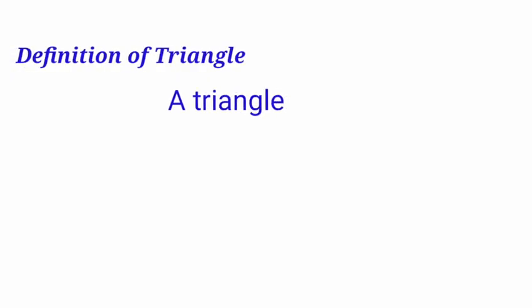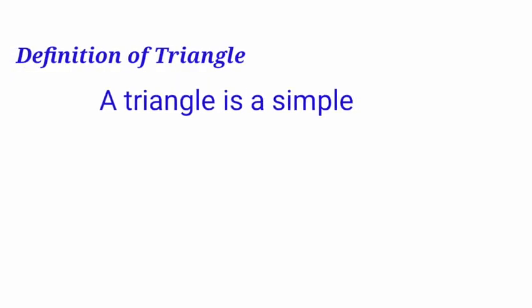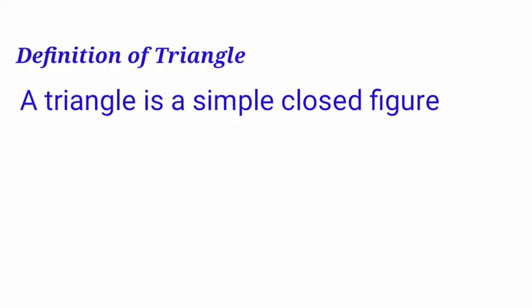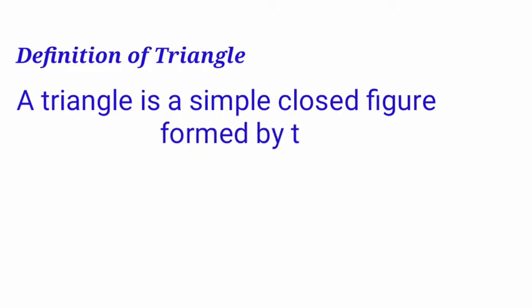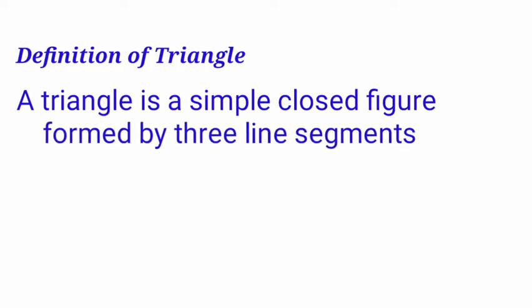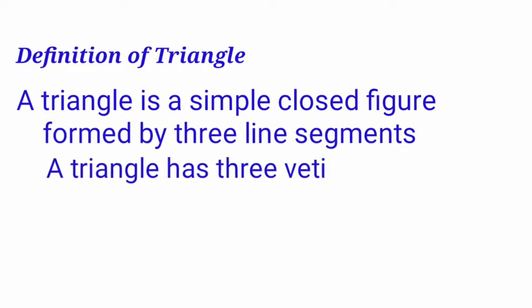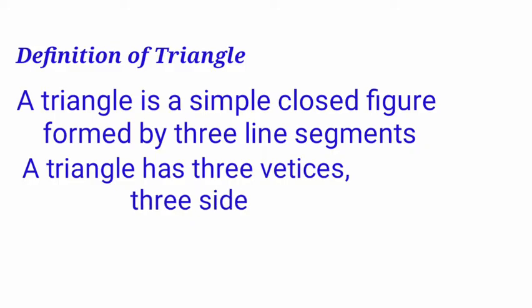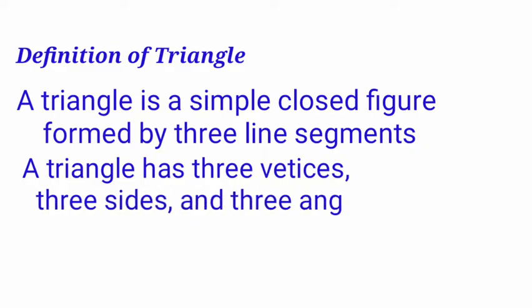The definition of triangle: A triangle is a simple closed figure formed by three line segments. A triangle has three vertices, three sides, and three angles.